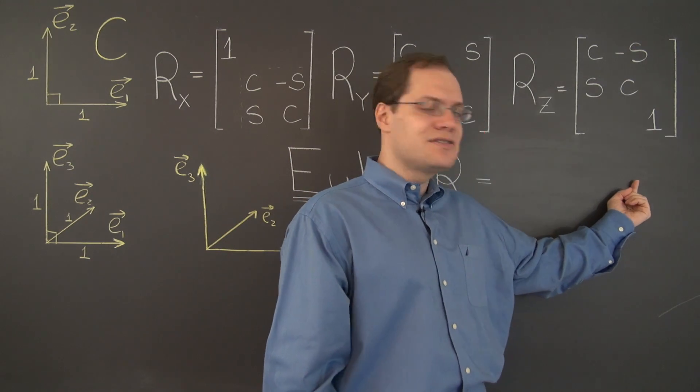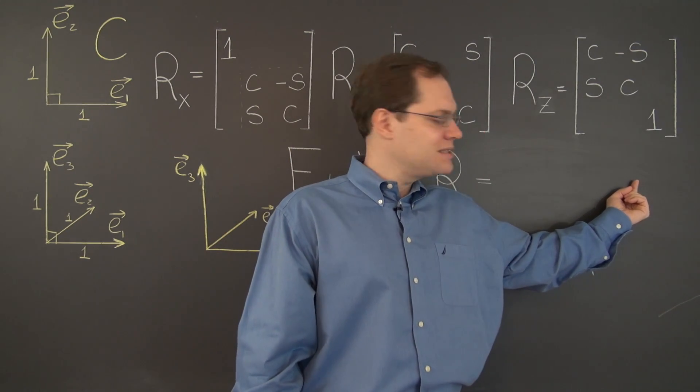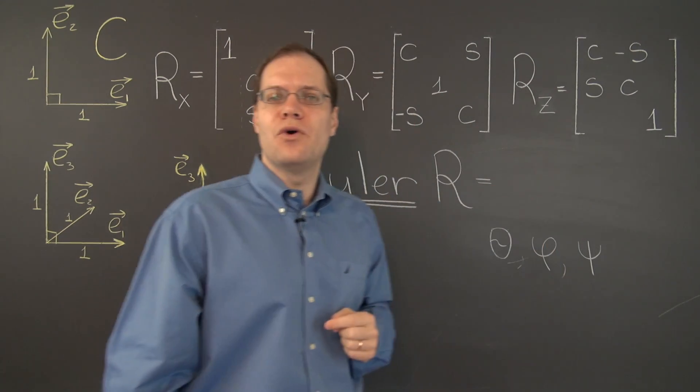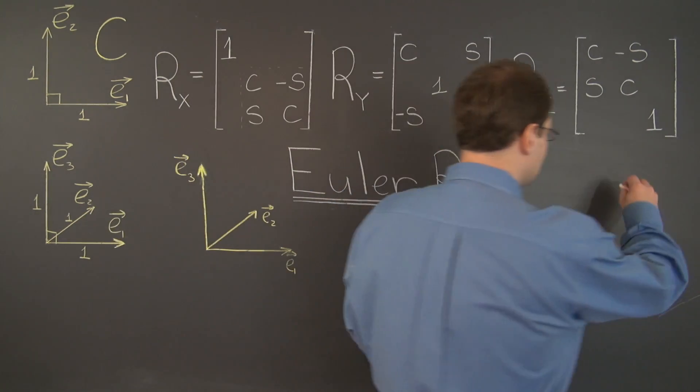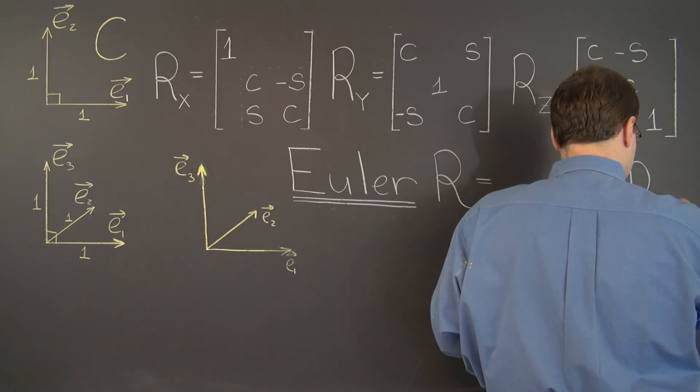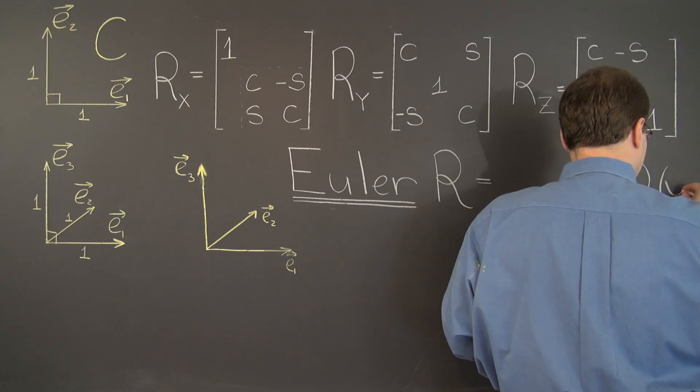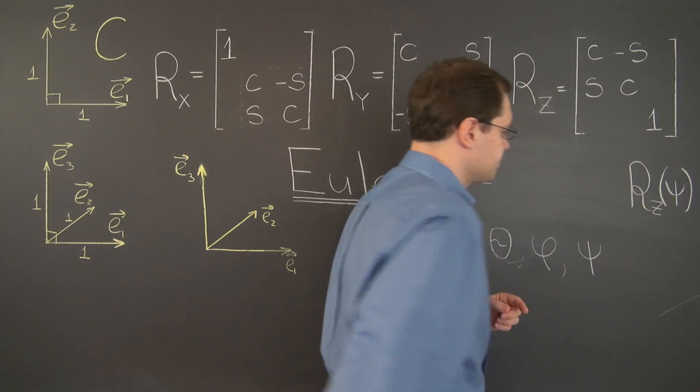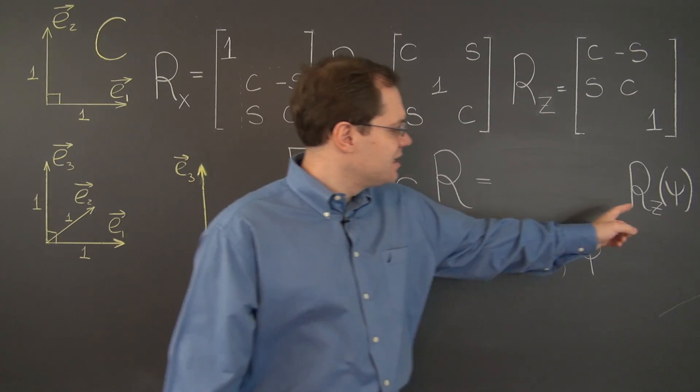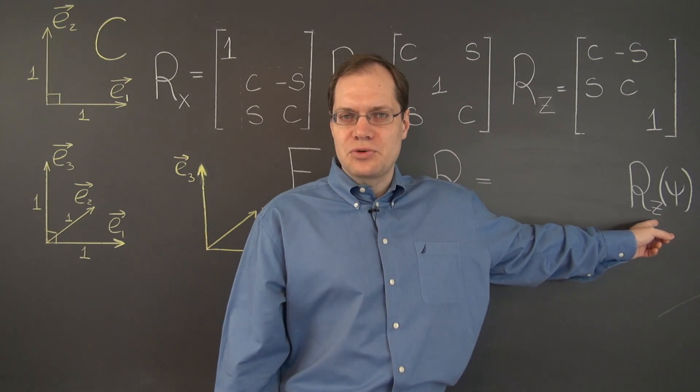The first operation is the rightmost matrix, the second operation is the next matrix to the left, and so forth. So, the first matrix you must multiply by is rotation with respect to the z-axis by the angle psi. Let me make sure it fit. I just squeezed it in there. All right, so this is giving the object the proper twist.